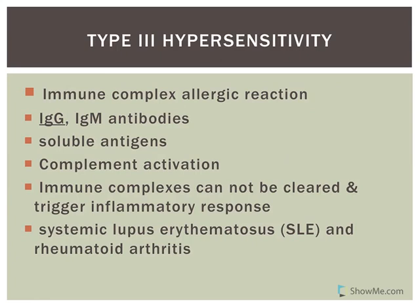With Type 3 hypersensitivity, you have the development of immune complexes, so it's referred to as an immune complex allergic reaction. It involves IgM and IgG antibodies — mostly IgG. The antigens are soluble, found in tissue fluids rather than on cell surfaces, and antibodies bind to these soluble antigens. These immune complexes can't be cleared, triggering an inflammatory response that causes collateral damage. Examples include lupus (systemic lupus erythematosus) and the joint damage seen in rheumatoid arthritis.